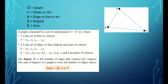In network and graph theory, it is very important to know what each letter and symbol represents. G represents graph. V is vertex or dot — from the diagram, A, B, and C are the vertices. E is the edge, line, or arc, shown in blue. D represents degree, and the sigma sign represents the sum.